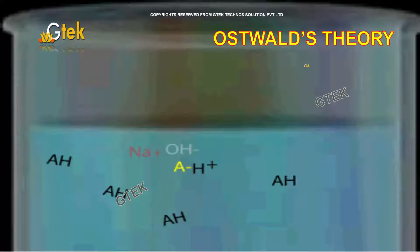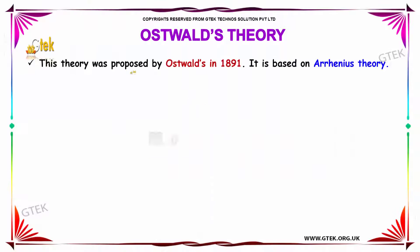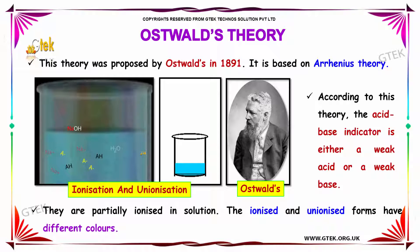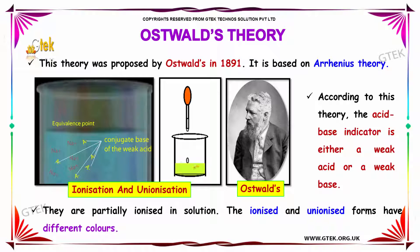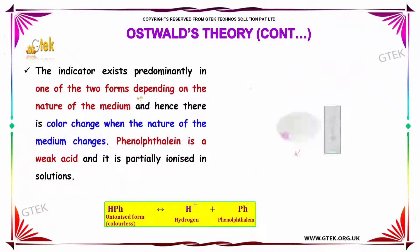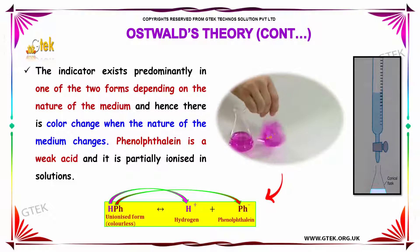Oswald's theory was proposed by Oswald in 1891. It is based on Arrhenius theory. According to this theory, the acid-base indicator is either a weak acid or a weak base. They are partially ionized in solution. The ionized and unionized forms have different colors. The indicator exists predominantly in one of the two forms depending on the nature of the medium, and hence there is a color change when the nature of the medium changes.